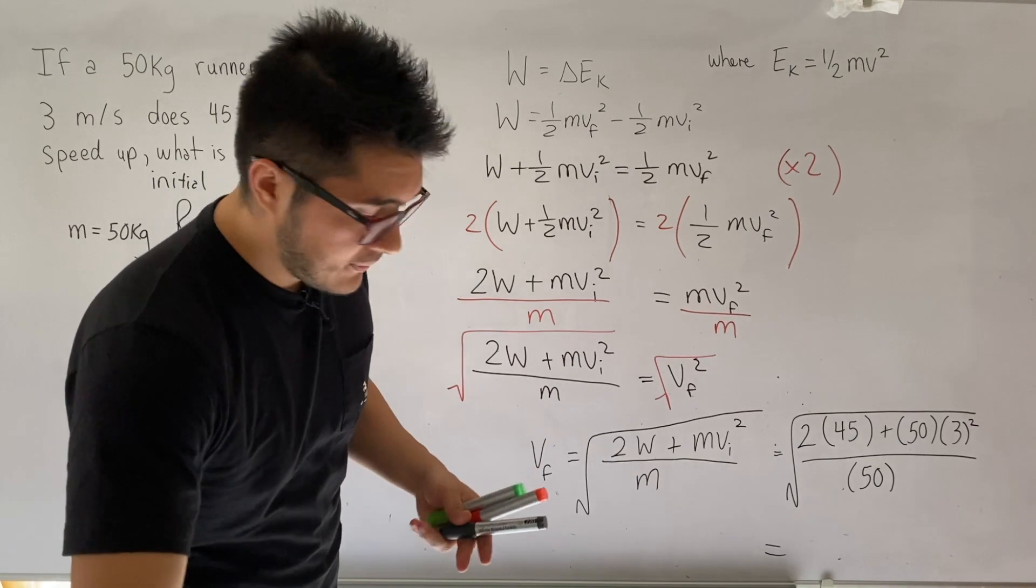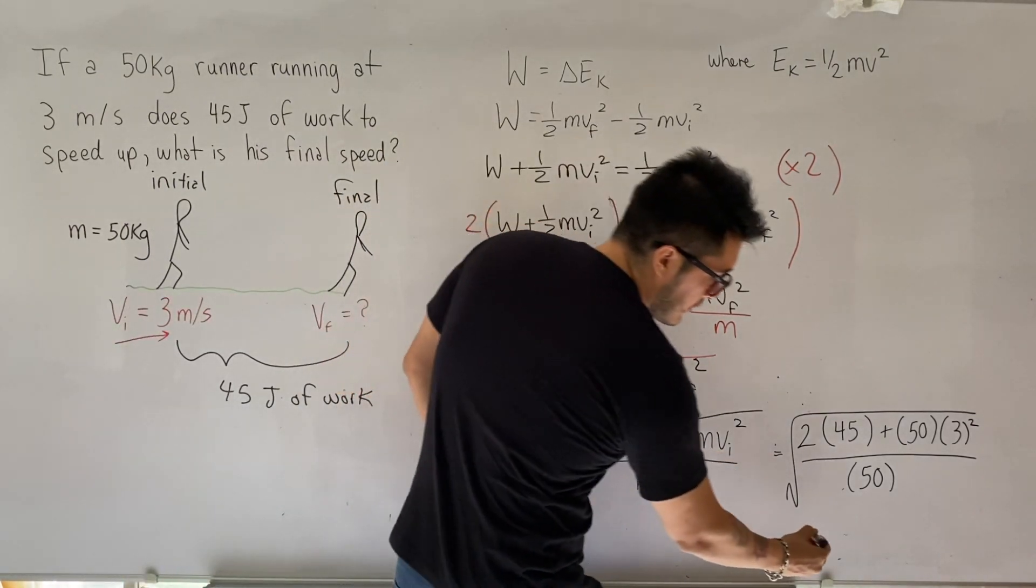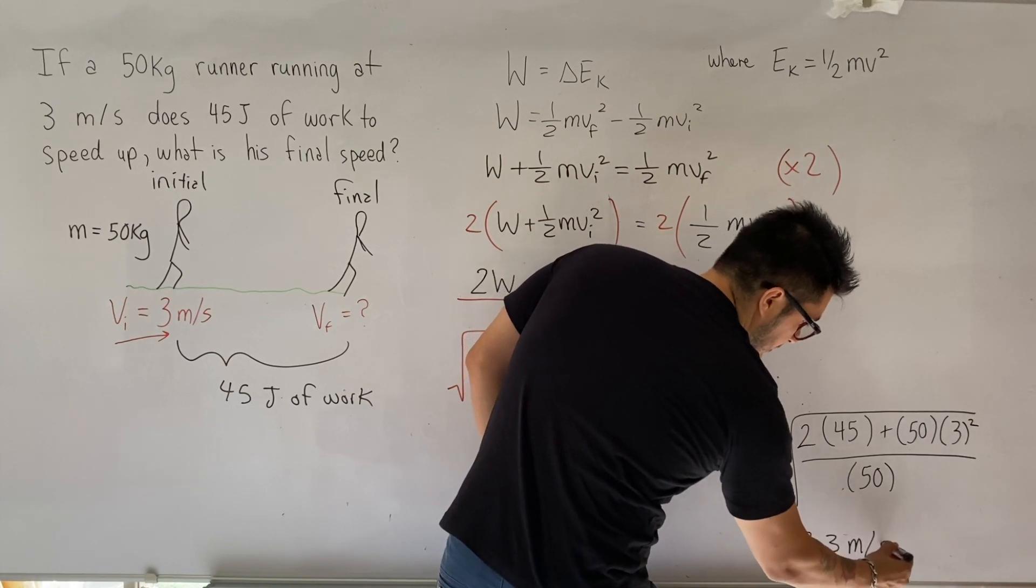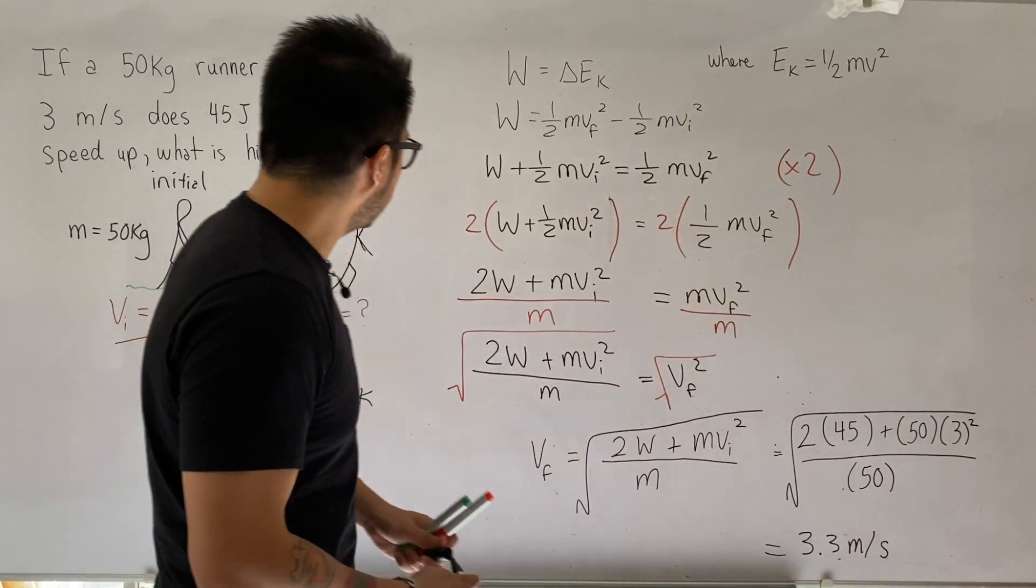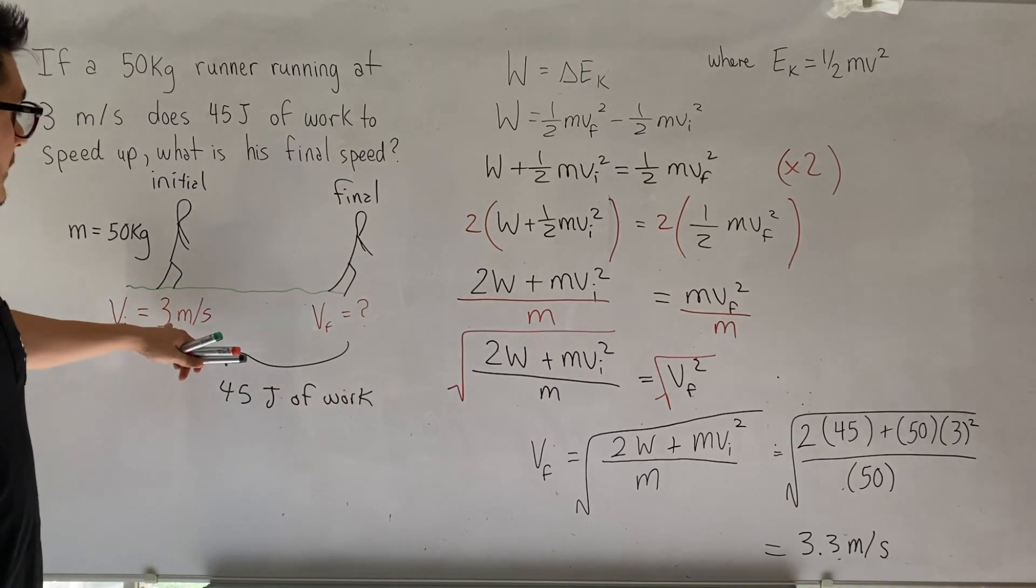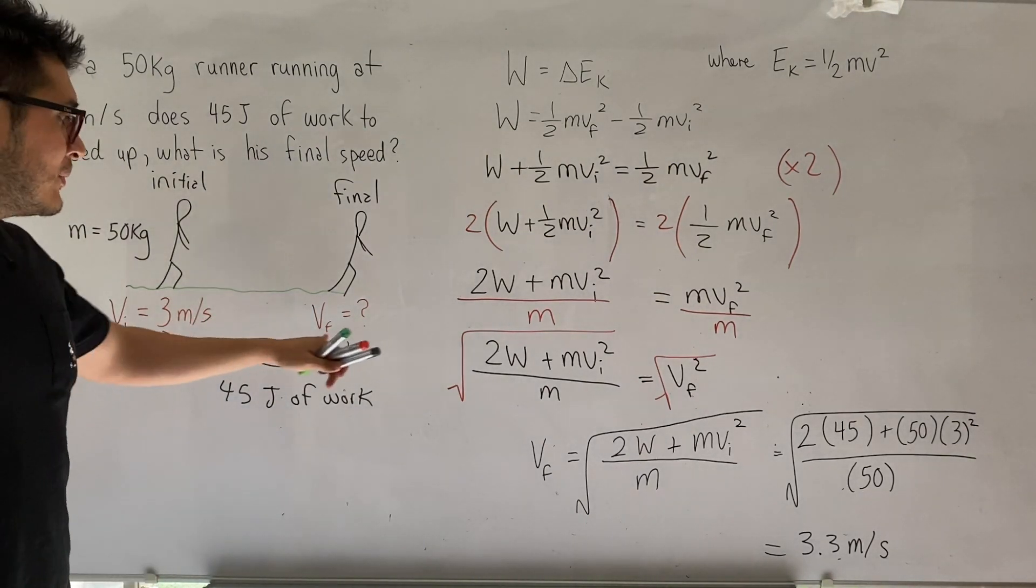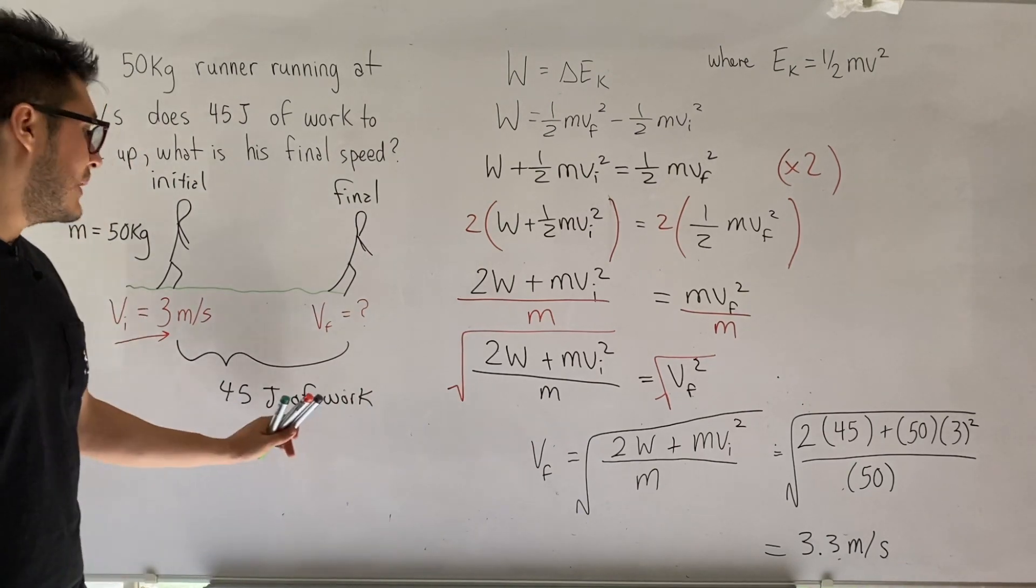3.3 meters per second. So did they get much faster from before? Not so much. So from 3 to 3.3, well, at least it got faster, so you know it makes sense.